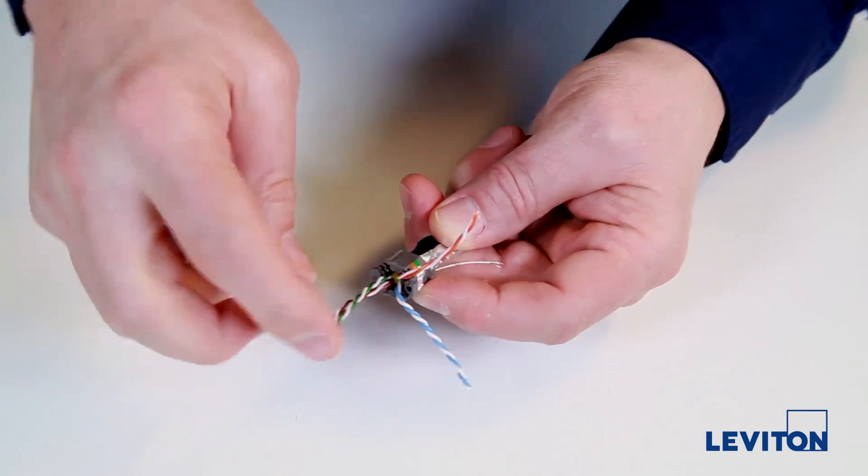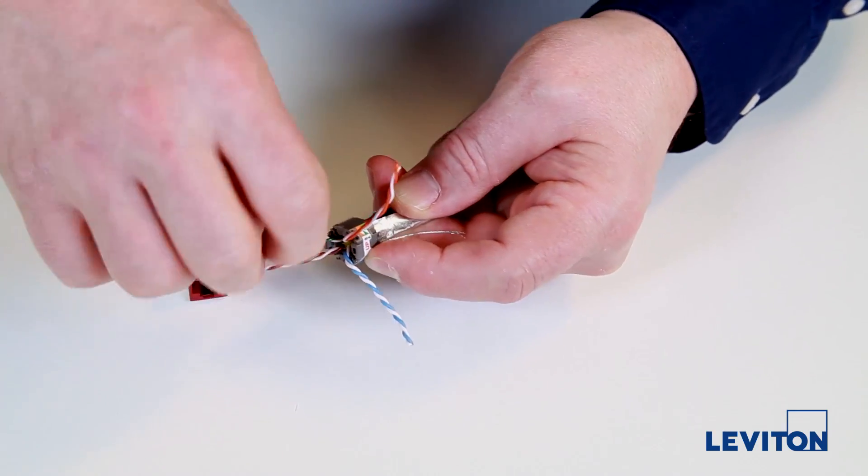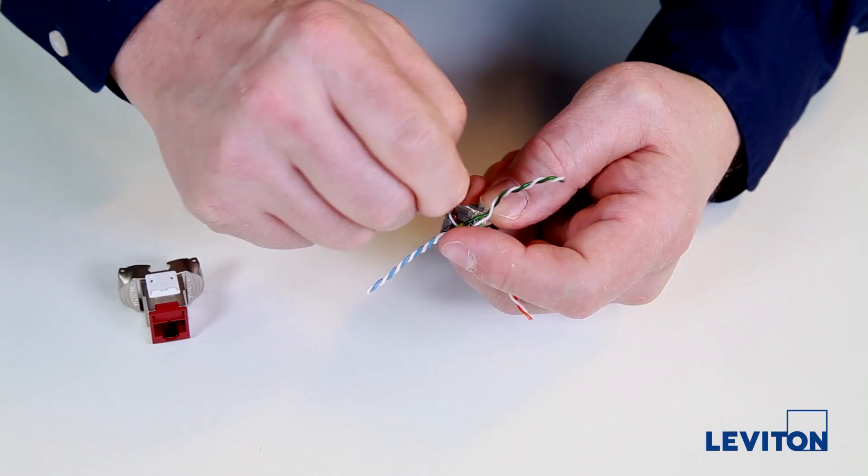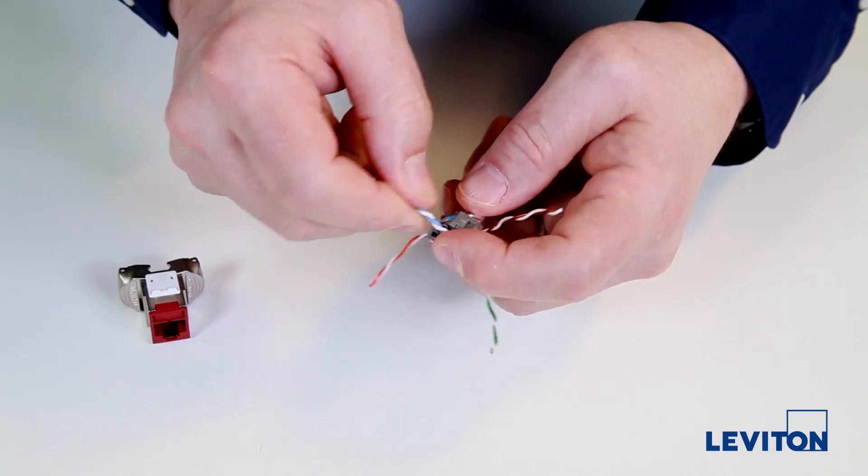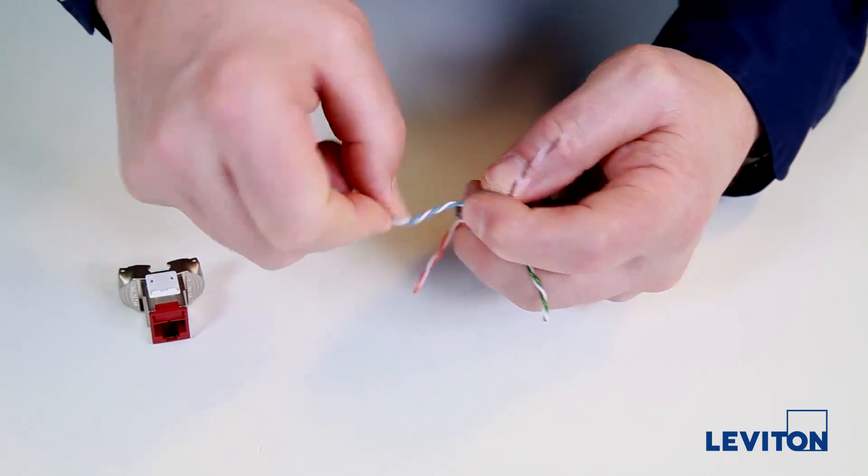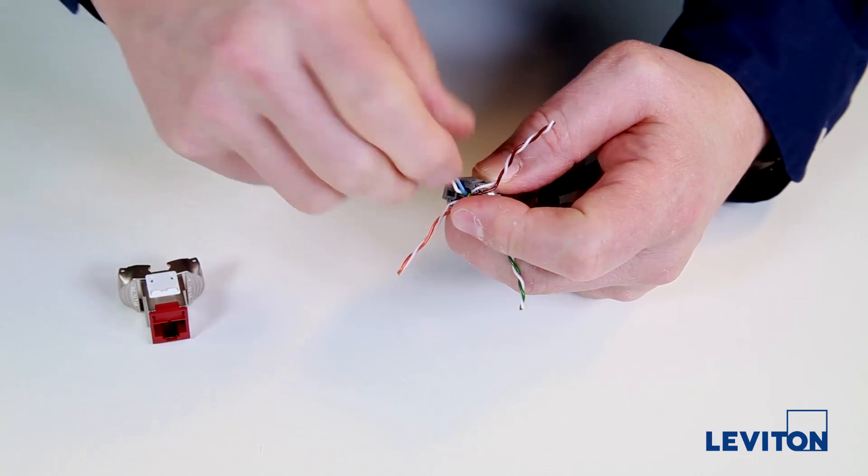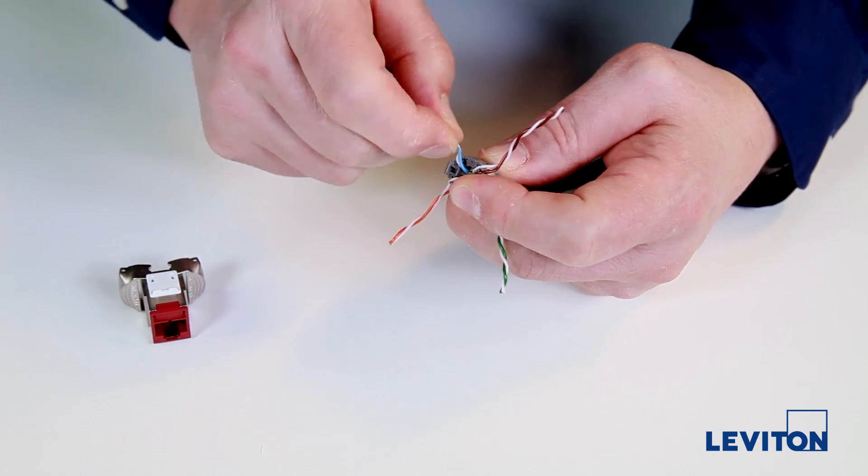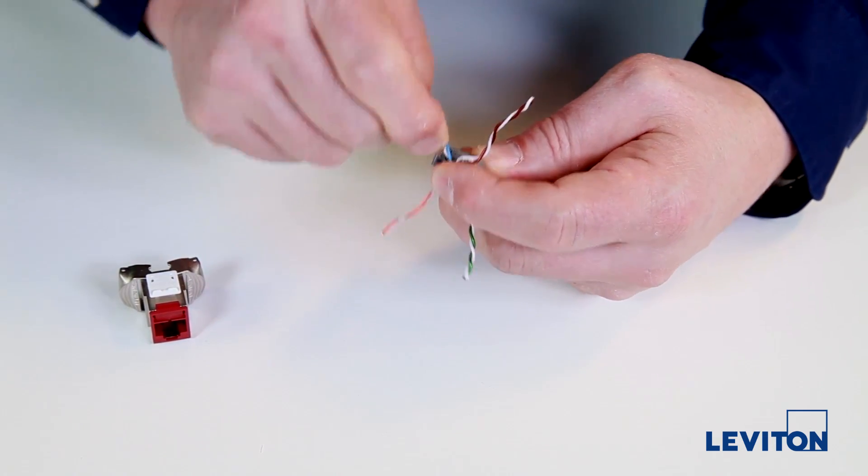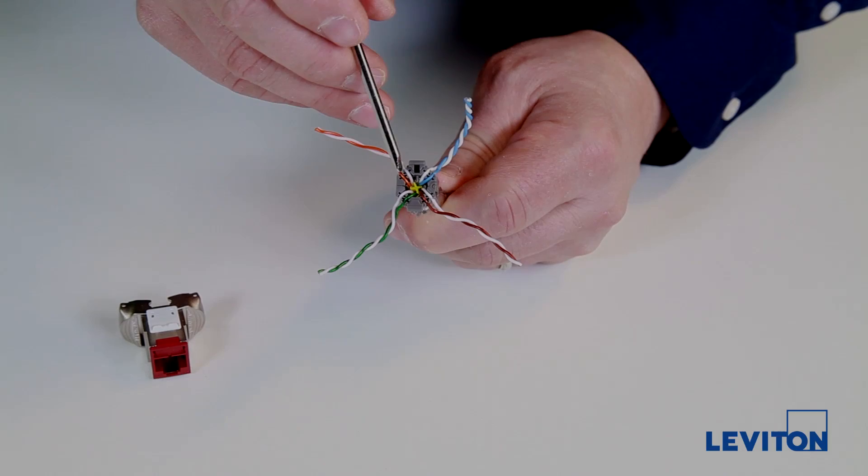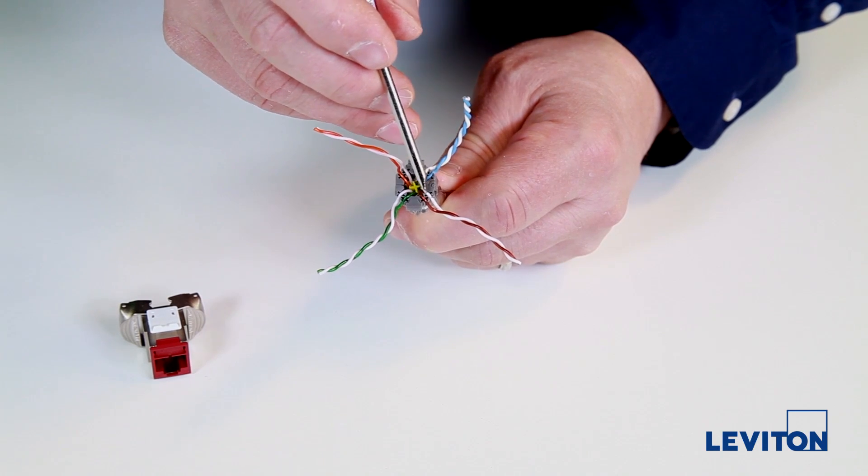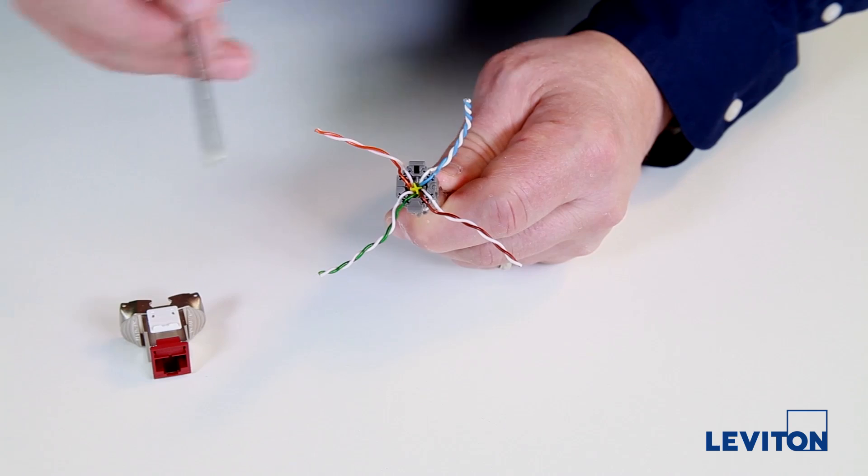Observing pair polarity on the wiring label, seat each pair into its wiring slot. Untwisting the pairs to ensure the center of the wiring slot is completely visible. There shouldn't be any pair crossovers at that point. Do a quick polarity check to make sure the white wire of each pair is closest to the guide pin hole.